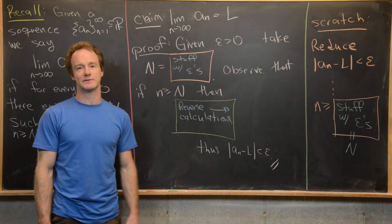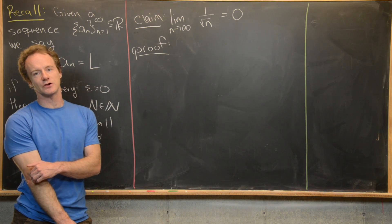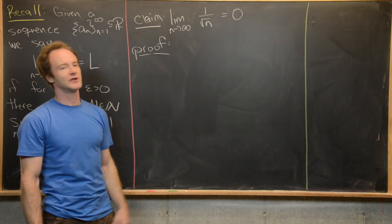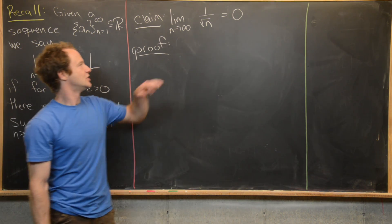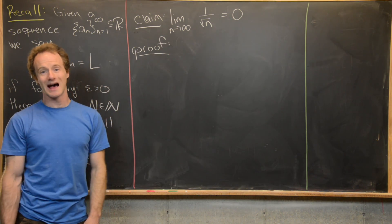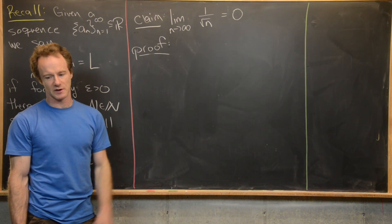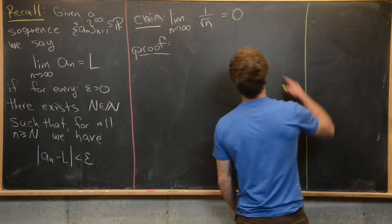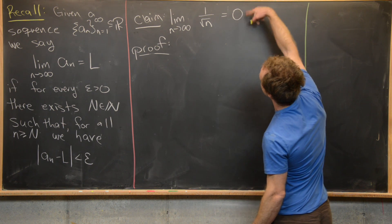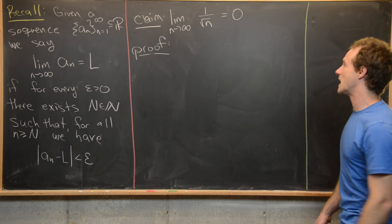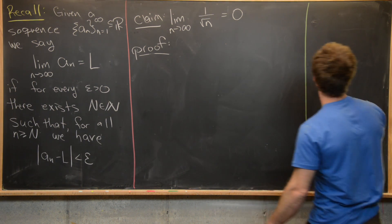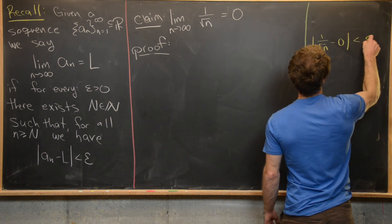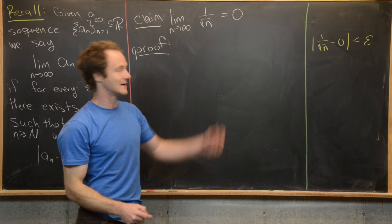We'll start by showing that the limit as n goes to infinity of 1 over the square root of n is equal to zero. This is an obvious value for the limit — as n gets larger and larger, you have a larger number in the denominator, which makes the whole thing smaller and smaller until it tends towards zero. Let's look at our scratch work. L is zero and a_n is 1 over the square root of n.